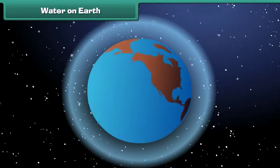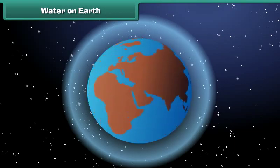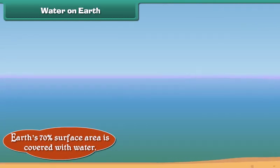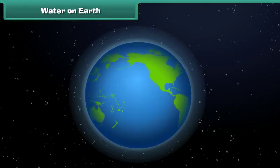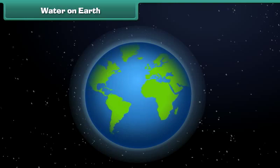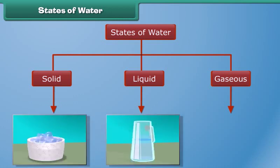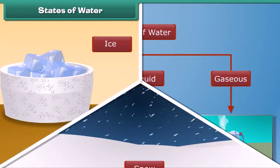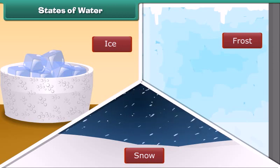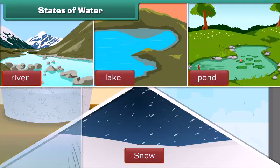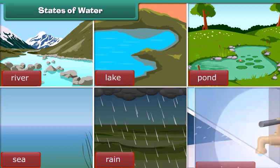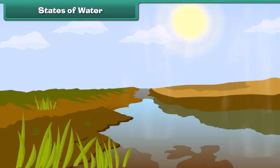What is the most abundant substance present on the earth? In fact, our earth's 70% surface area is covered with water. Earth is also called a blue planet because when seen from space it appears blue due to water. Water exists in three states: solid, liquid and gaseous. Ice, snow and frost are examples of water in the solid state. You see liquid water in rivers, lakes, ponds, sea, when it rains, and the water coming out of a tap. Water vapor is a gas in the air — you can't see gas because it is invisible.